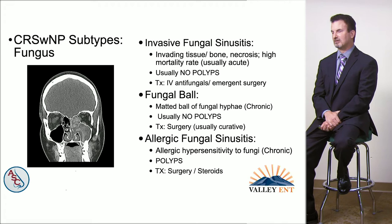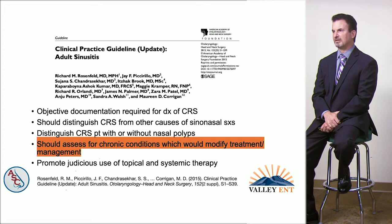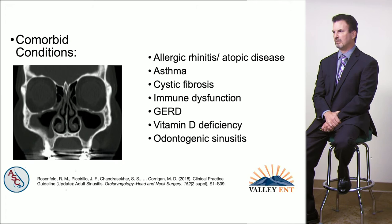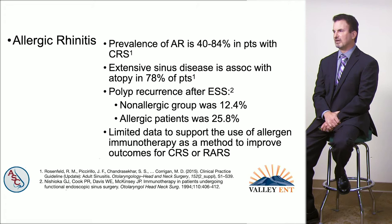In allergic fungal sinusitis, surgery and steroids are adjunctive measures and not cures. The fourth highlighted issue from the updated guidelines was to assess for comorbid conditions which affect management. The prevalence of allergic rhinitis is 40 to 80 percent in patients with CRS, and extensive sinus disease is associated with atopic disease in about four out of five patients.